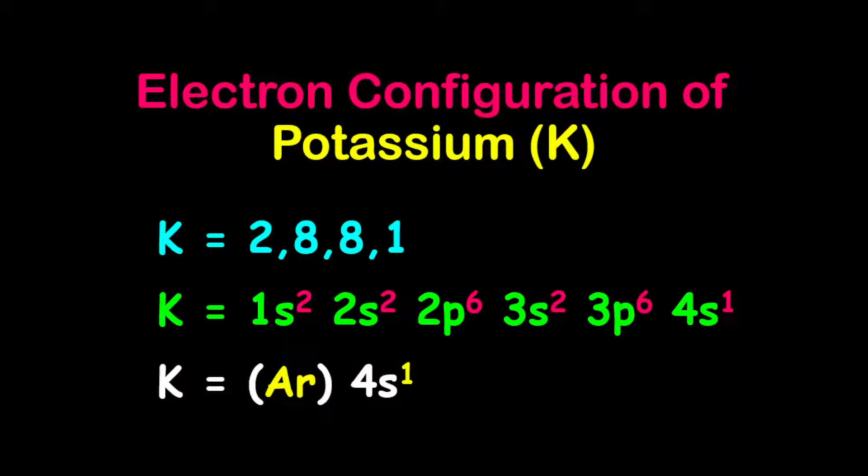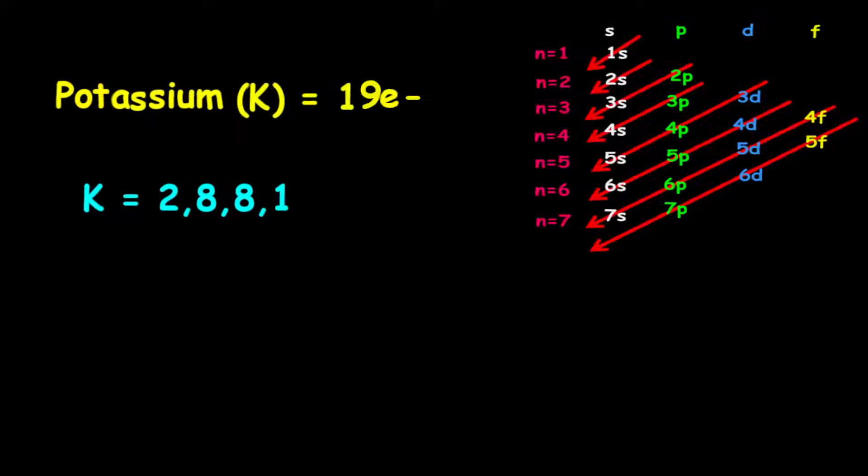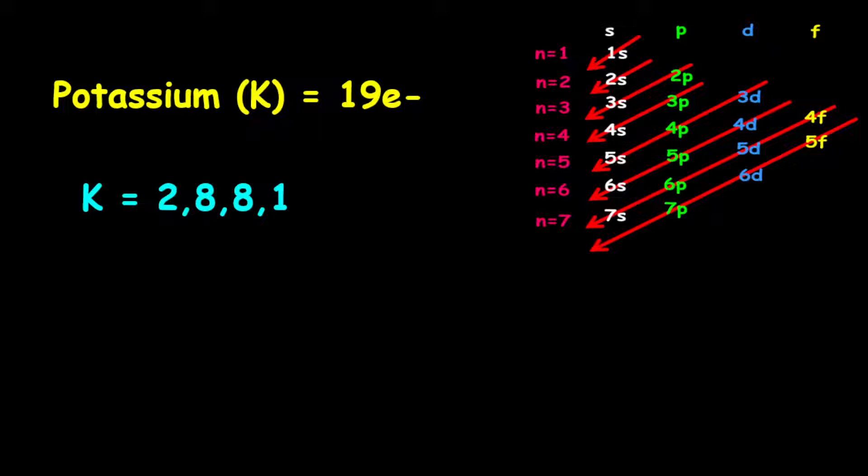The electron configuration of potassium. Potassium has 19 electrons: 2 electrons on the first shell, 8 electrons on the second, and also 8 electrons on the third shell, and 1 electron on the last shell. Therefore, the electron configuration is given as 2,8,8,1.